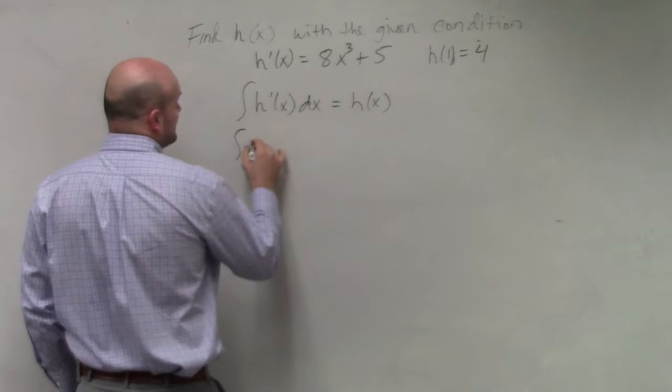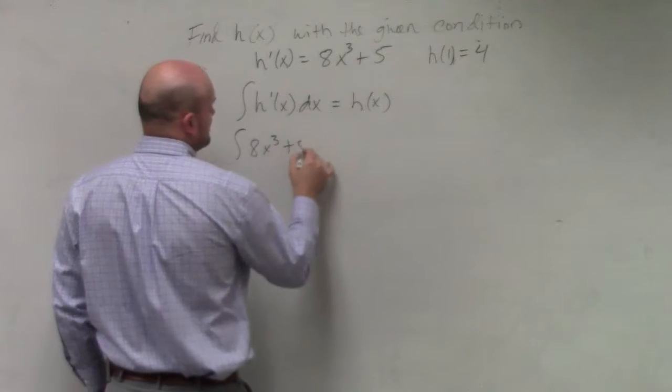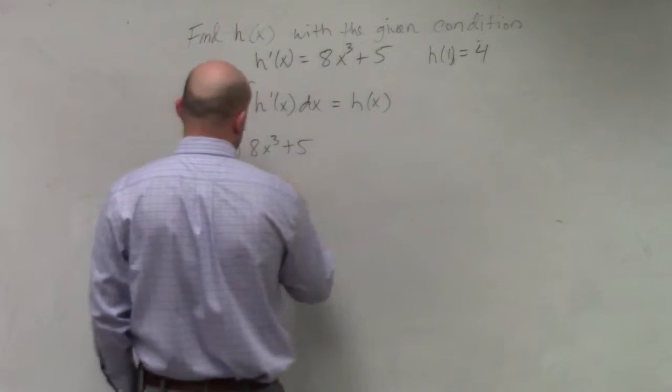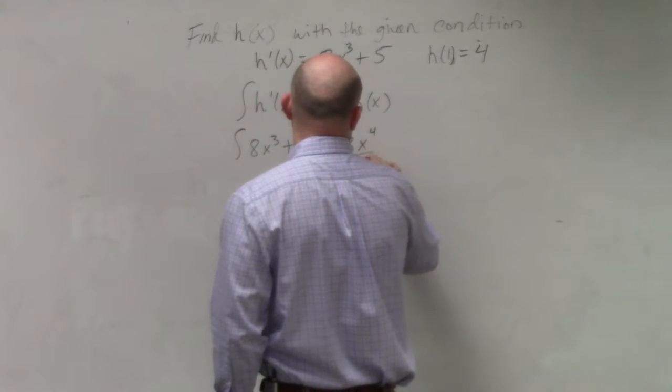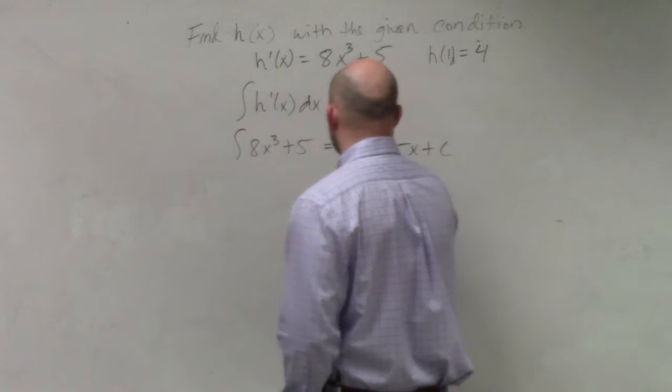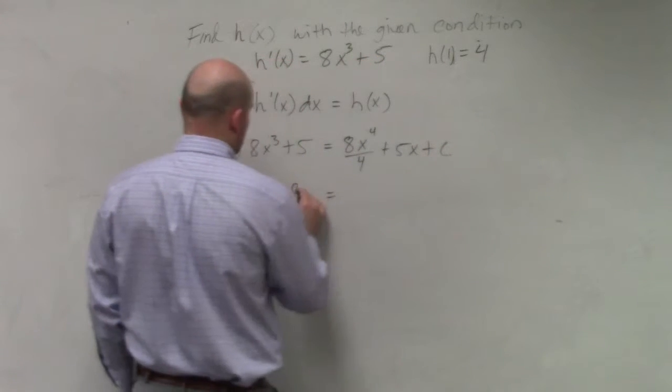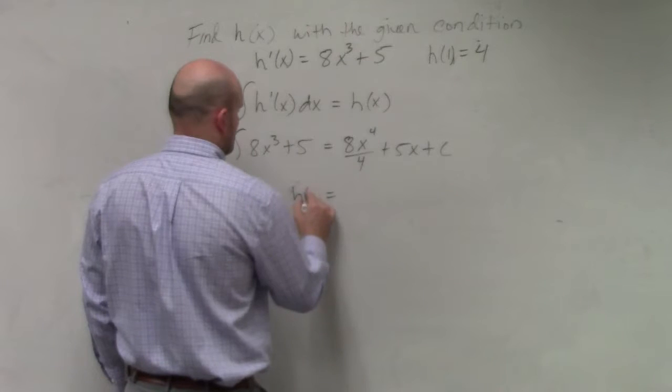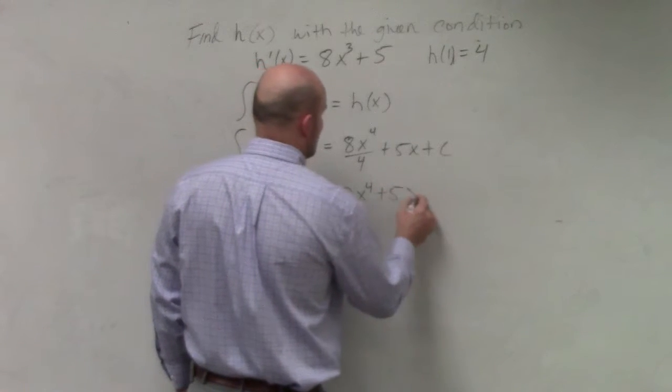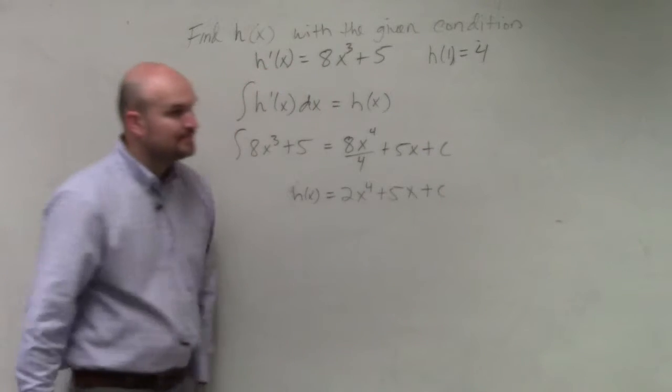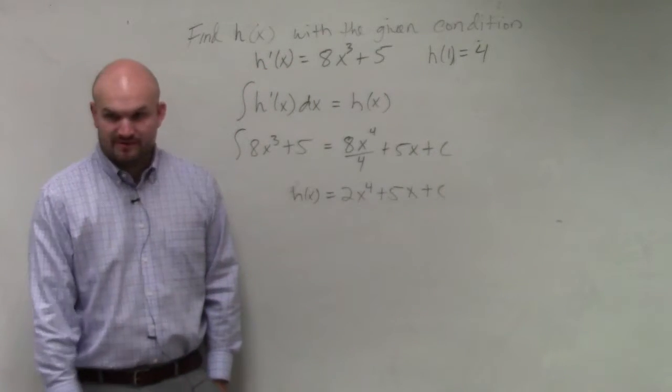So when we integrate 8x cubed plus 5, we're going to get 8x to the fourth divided by 4 plus 5x plus c, which we can simplify as h of x equals x to the fourth plus 5x plus c. Everybody follow me?